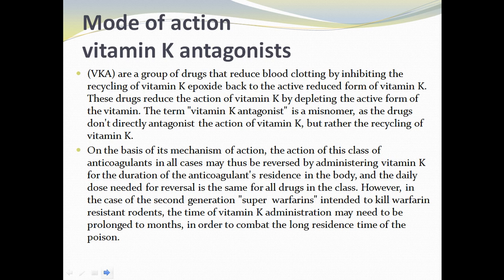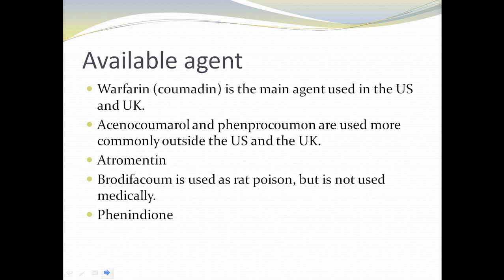Mode of action: Vitamin K antagonists are a group of drugs that reduce blood clotting by inhibiting the recycling of vitamin K epoxide back to the active reduced form of vitamin K. This reduces the action of vitamin K by depleting its active form. The term 'vitamin K antagonist' is a misnomer, as these drugs don't directly antagonize vitamin K but rather inhibit its recycling. Available agents include warfarin, the main agent used in the United States, and acenocoumarol and phenoprocoumon, used more commonly outside the United States, as well as atromentin.